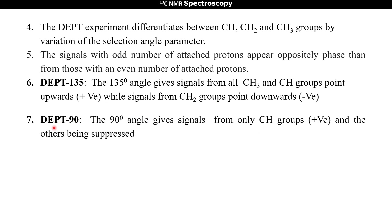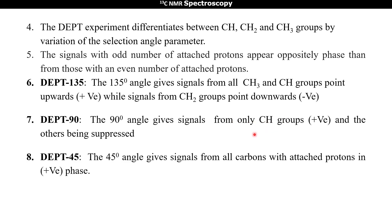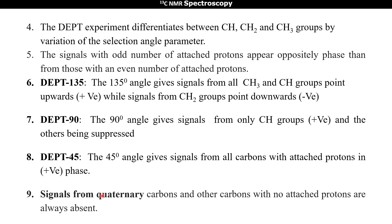The next experiment is DEPT 90. The 90 degree angle gives signals from only CH groups, which appear as positive peaks, with CH3 and CH2 signals suppressed. In DEPT 45, the 45 degree angle gives signals from all carbons with attached protons in positive phase. Quaternary carbons and other carbons with no attached protons are always absent in all DEPT experiments.